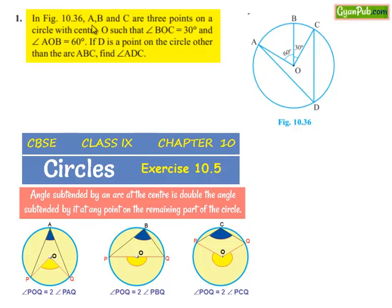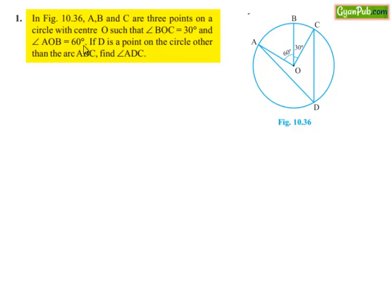Coming to the first question. In figure 10.36, A, B, and C are three points on the circle with center O such that angle BOC is equal to 30 degrees and angle AOB is equal to 60 degrees. If D is a point on the circle other than the arc ABC, find angle ADC.